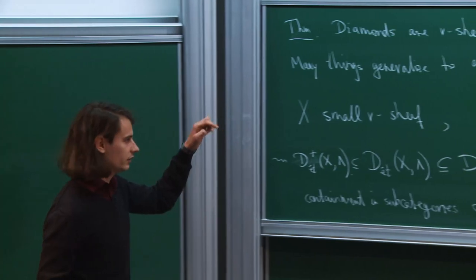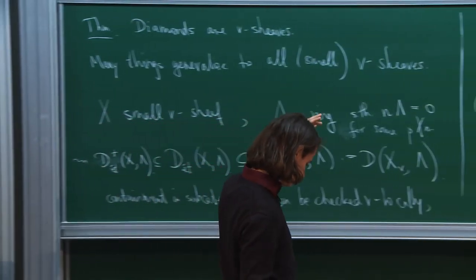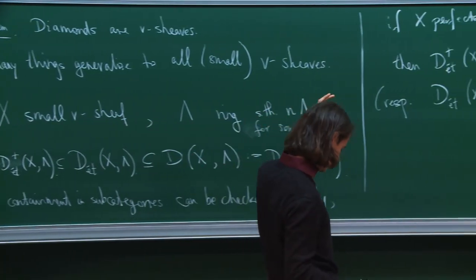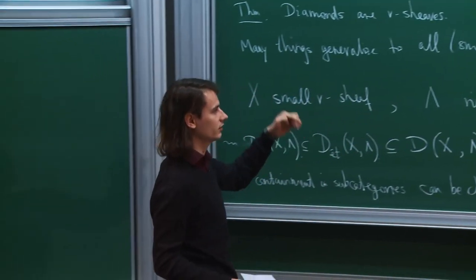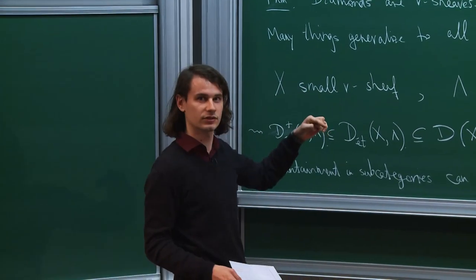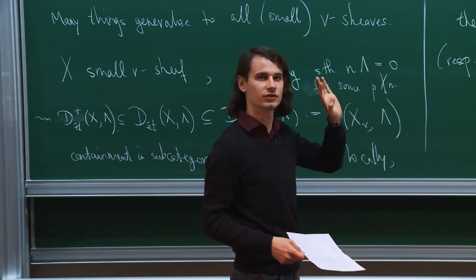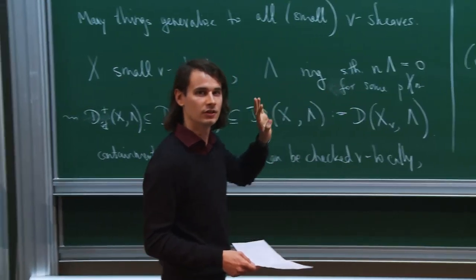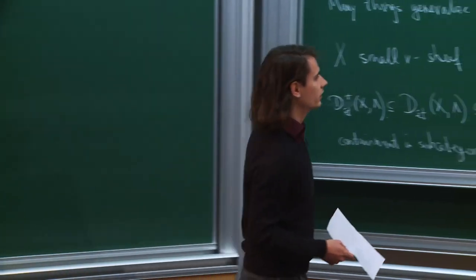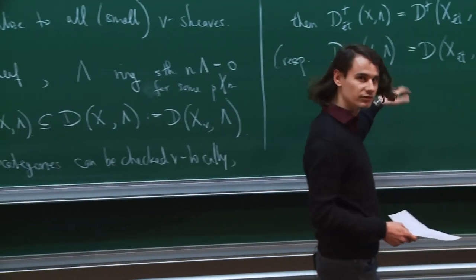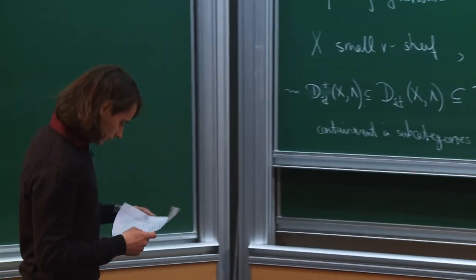If you want the statement to be true for the unbounded category, you need this extra assumption. You can get it in slightly more general settings if there is some bound on the homological dimension of X. In the strictly totally disconnected case, is there a bound on the homological dimension? Yes — the homological dimension is zero, because for any separated étale quasi-compact map to a strictly totally disconnected space, there is no higher cohomology at all.